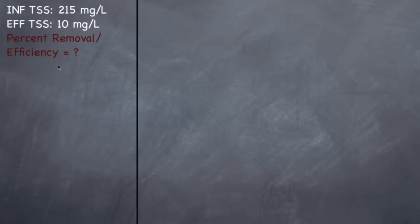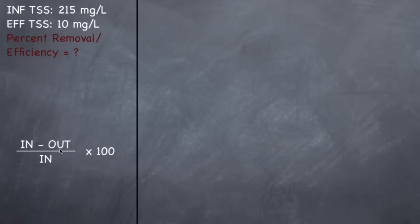Now we want to find percent removal and percent efficiency. These two are exactly the same — whether they say percent removal or percent efficiency, it's the same formula. The formula is: what's coming in minus what's going out, divided by what's coming in, all times 100.